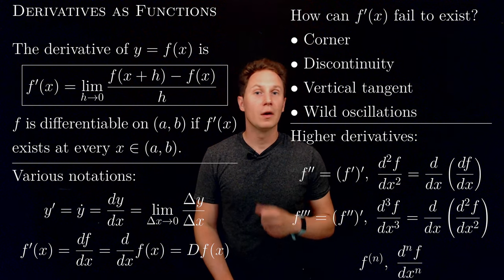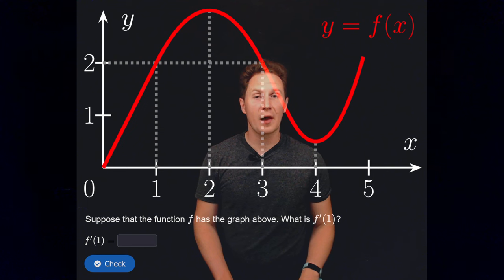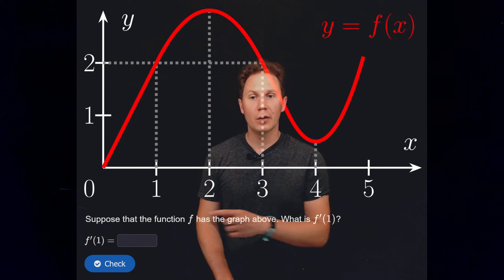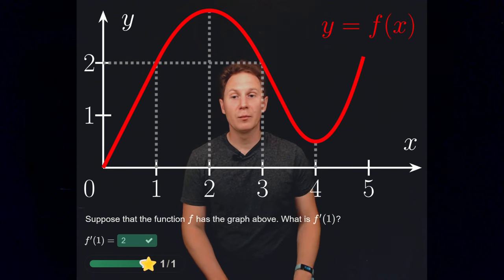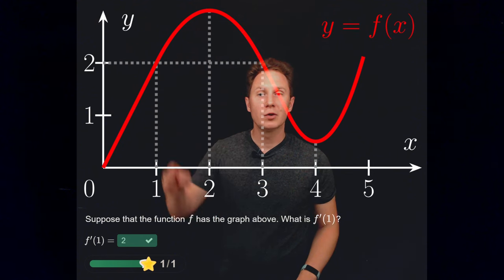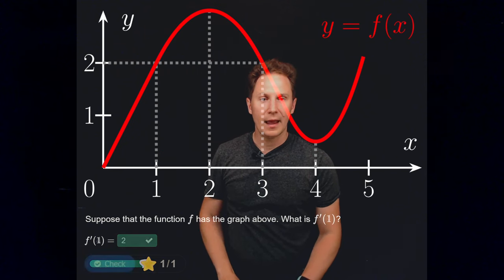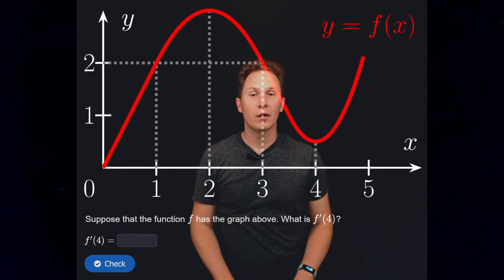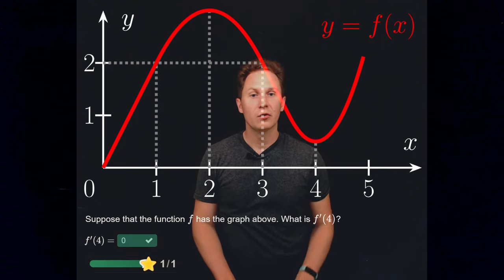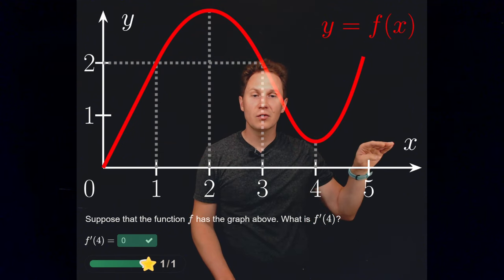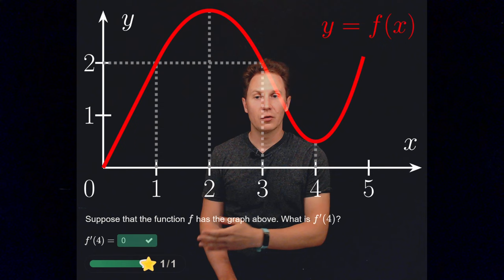Here's the graph of function f, and we are looking for the derivative of f evaluated at x = 1. The derivative at x = 1 is 2, which you can see as the slope of the tangent line around x = 1. Next, at x = 4 the slope of the tangent line is 0, because the tangent line there is horizontal — parallel to the x-axis — so that derivative is 0.